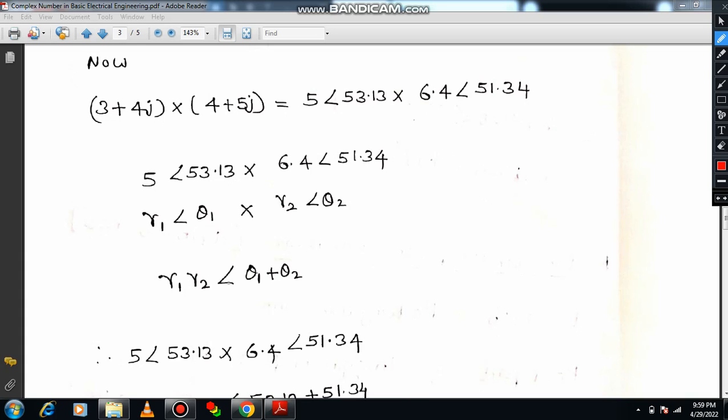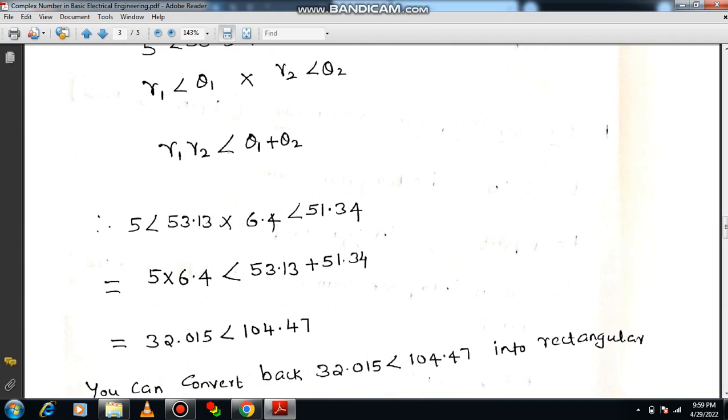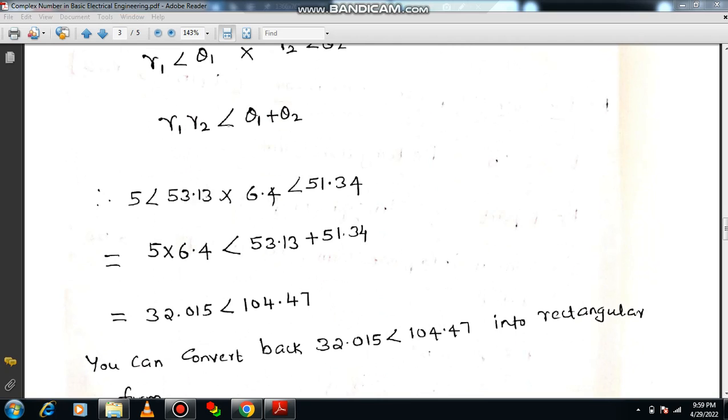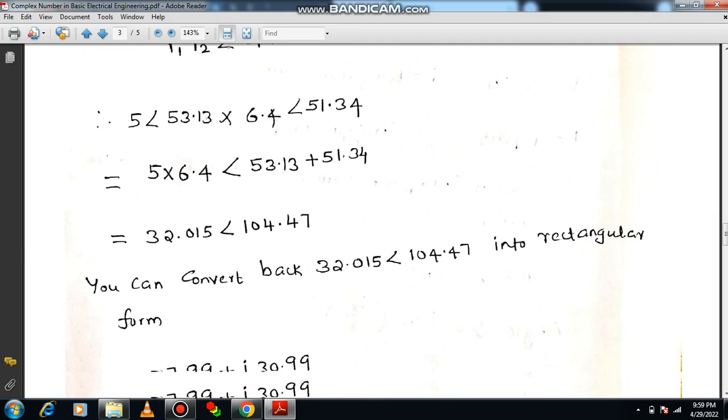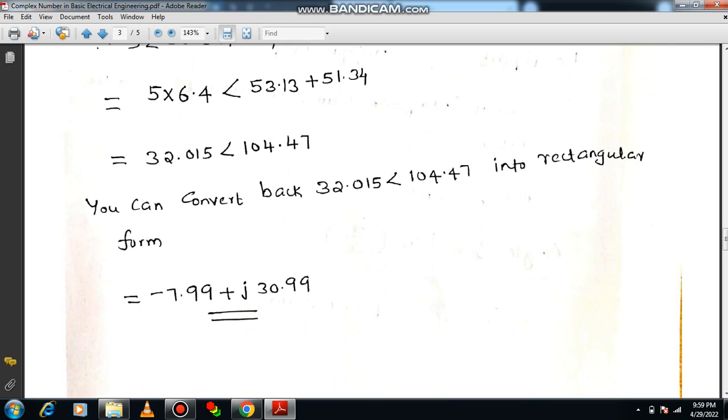So 5 into 6.4, that is no issue with that. But angle you have to add both. So 53.13 plus 51.34. Do the calculation separately, then you can verify with me. So 5 into 6.4 will be 32.015 and angle will be added, so I am getting 104.47. So once you get in polar form, 32.015 angle 104.47 is a polar form. If you want you can convert it into rectangular form by using calculator or by using manual manner.